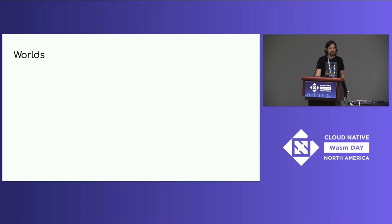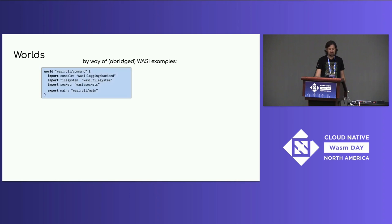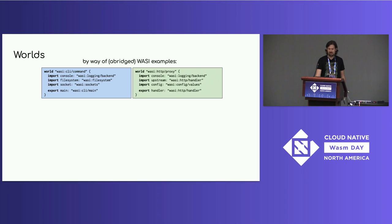To show worlds by way of example: I define a world called WASI CLI command that captures a traditional POSIX environment where I get to import a logging backend as my console and a file system and sockets, and export a main function — a traditional POSIX view of the world. Separately, I could have a WASI HTTP proxy world where I import a console — using the same interface, since interfaces don't care which world they're used in — but instead of a file system and sockets, I'm importing an upstream handler and configuration values, and exporting an HTTP handler interface. Importantly, the same WASI HTTP handler interface can be used as both an import and an export, which is critical for virtualization.